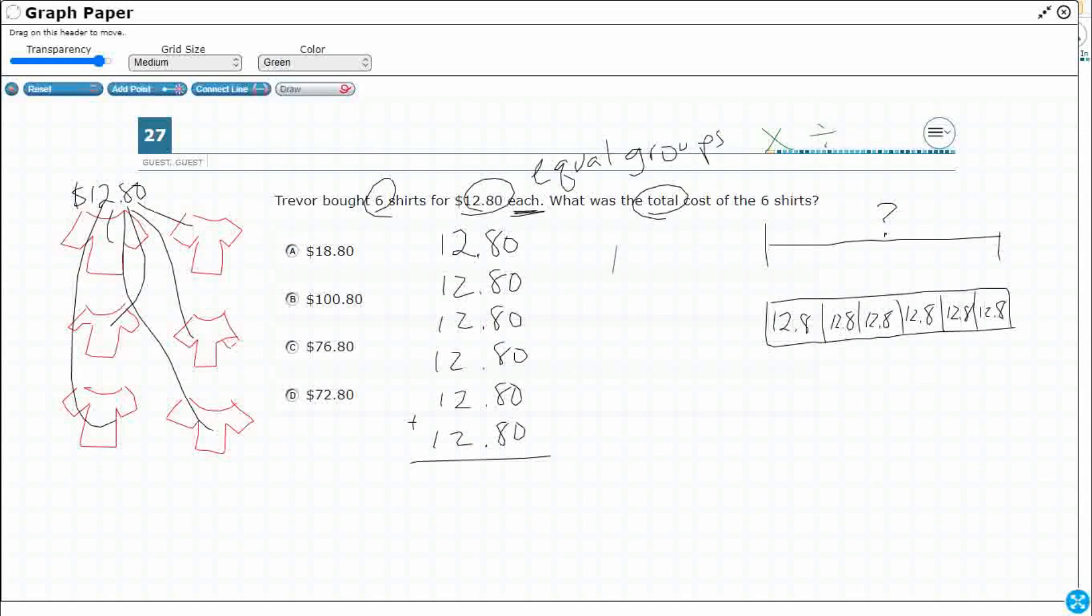So what happens if we do 12.80 times six? Six sets of 12.80. Well, let's do both here. We'll do them side by side so you can see how they work.